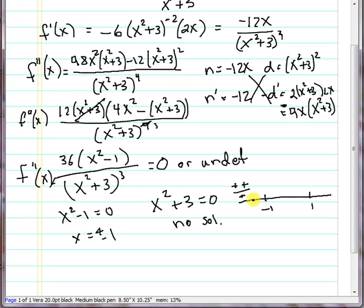So we have a positive second derivative, which means this interval is concave up. If I put zero in, I get positive negative over positive. So I have a negative second derivative, concave down. And here I'm going to have all positives, concave up.